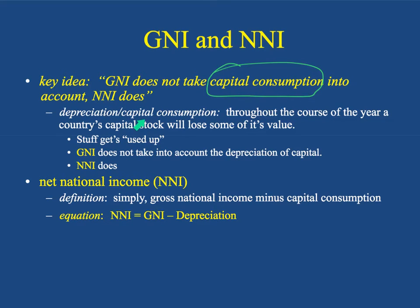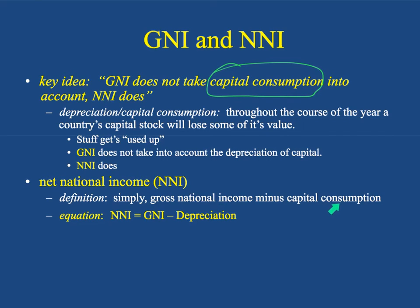In a national sense, throughout the course of a year a country's capital stock will lose some of its value. In other words, stuff gets used up — things that are new at the beginning of the year are used up by the end of the year, and economists like to account for that depreciation. So gross national income does not take into account the depreciation of capital, whereas net national income does. Net national income is simply gross national income minus the depreciation of those goods, or capital consumption.